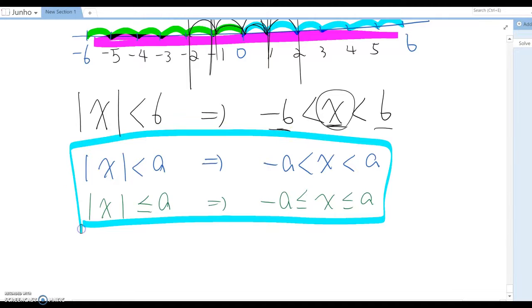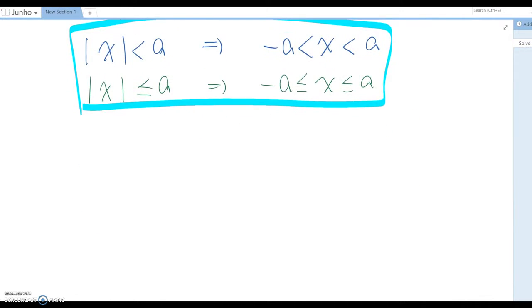Now, what about I am going to assign the same numbers and same variable but different direction? Like absolute x is now bigger than 7. Then interpretation, this means this x value is more than 7 units.